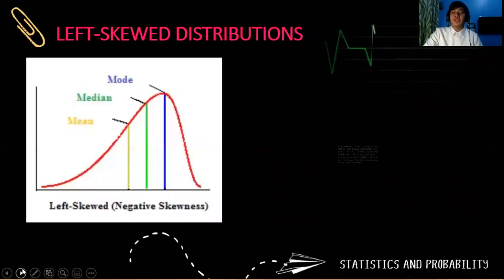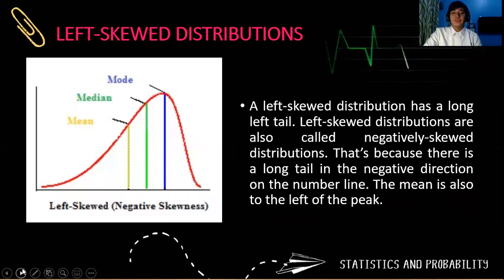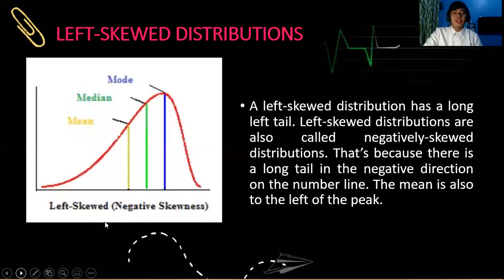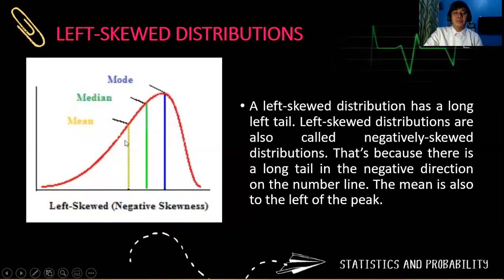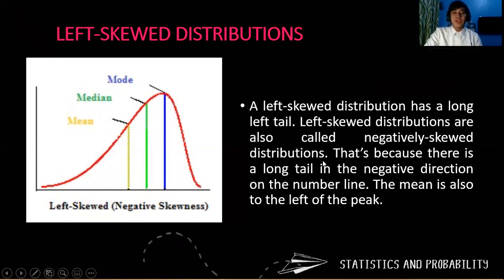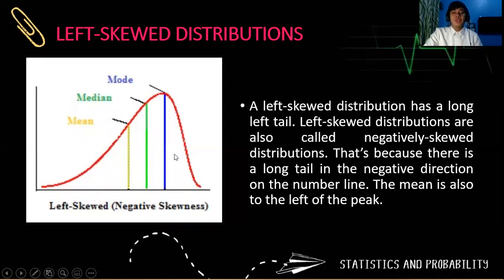Now let us talk about the left-skewed distribution. So that is the opposite. Notice that the long tail in the negative direction of the number line is long. And the mean is also on the left of the peak, and that is the mode. Look at the mean compared to the mode. So this left-skewed distribution is also sometimes called the negatively skewed distribution.